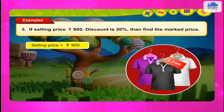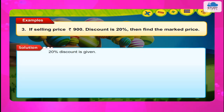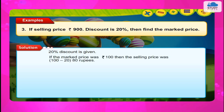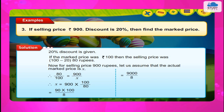Example 3: If selling price = Rs. 990 and discount is 20%, then find the marked price. Solution: 20% discount is given. If the marked price was Rs. 100, then the selling price was Rs. 100 − 20 = Rs. 80. Now, for selling price Rs. 990, let the actual marked price be Rs. X. Therefore, 80 upon 100 = 990 upon X. Therefore, X = 990 × 100 upon 80 = Rs. 1,237.50. Therefore, marked price = Rs. 1,237.50.